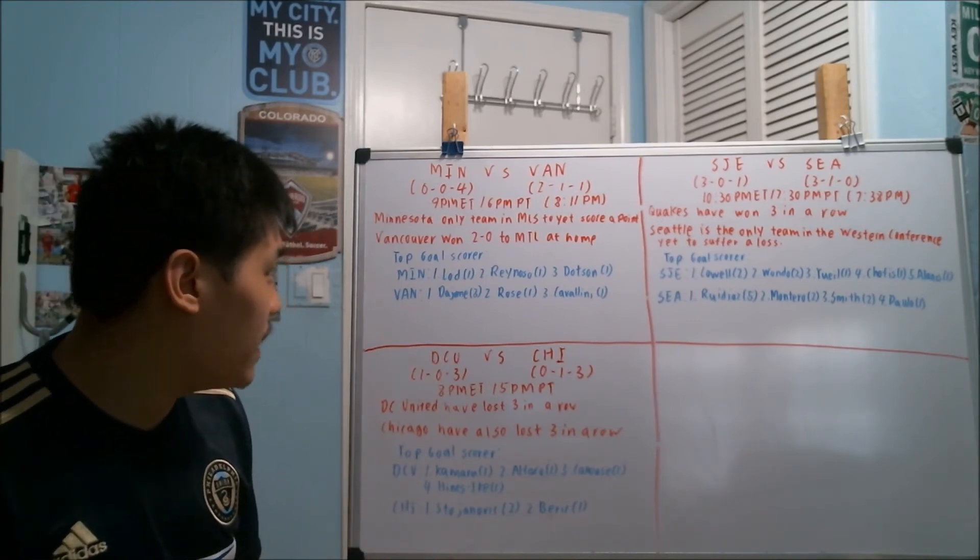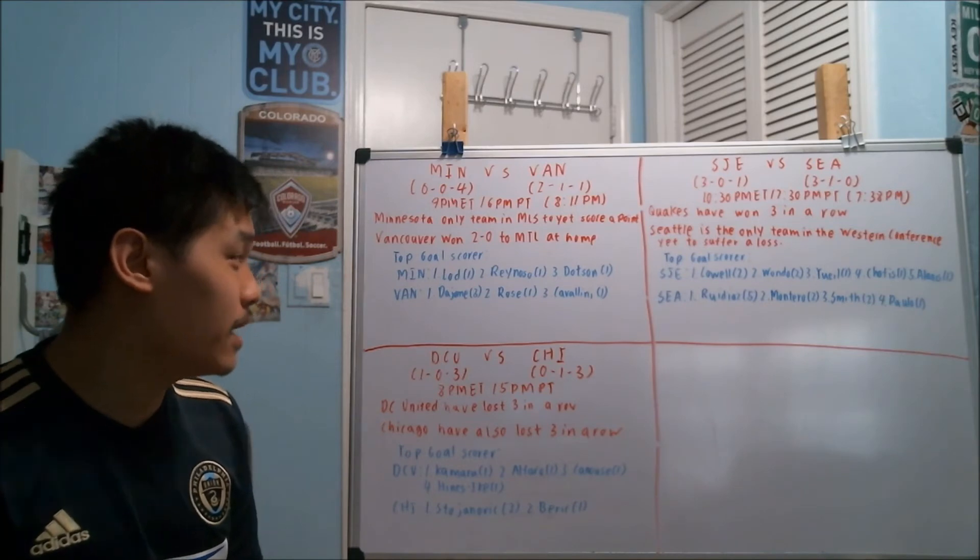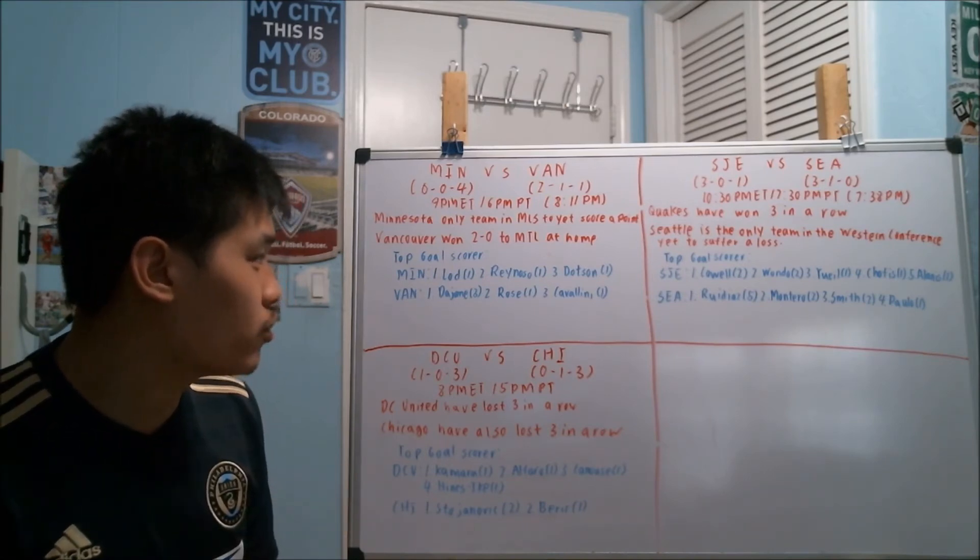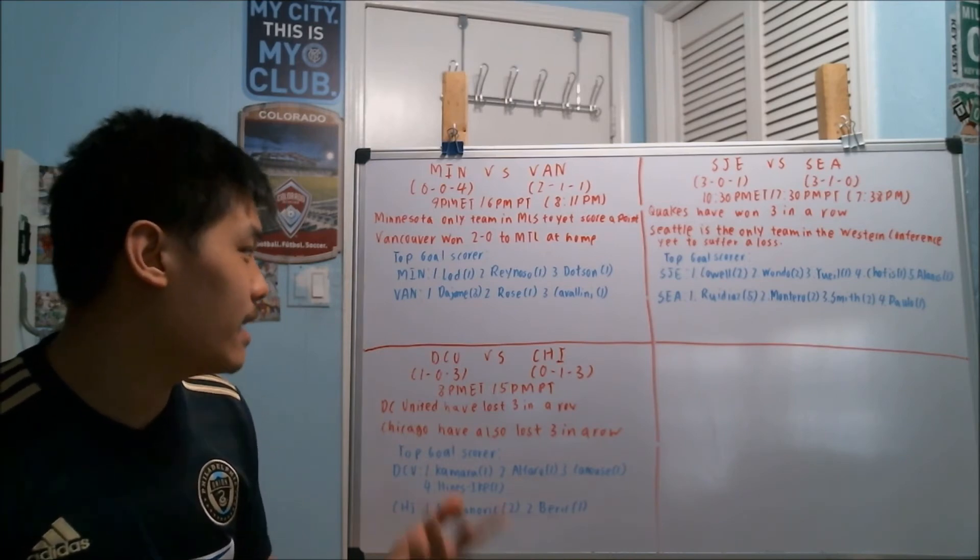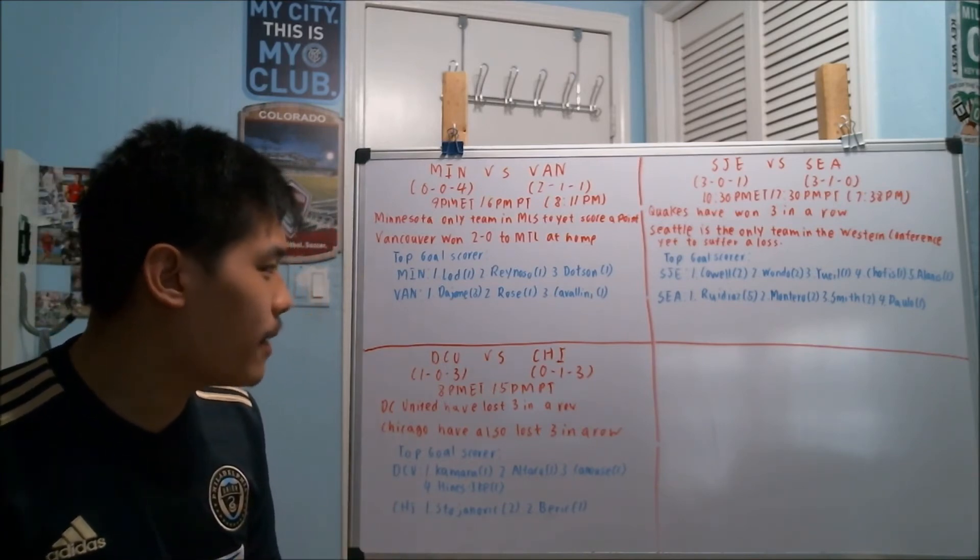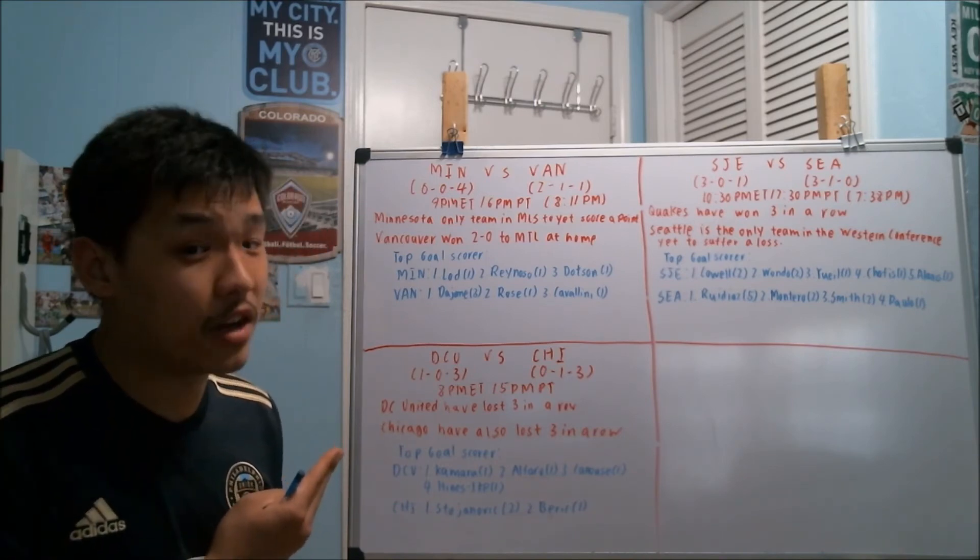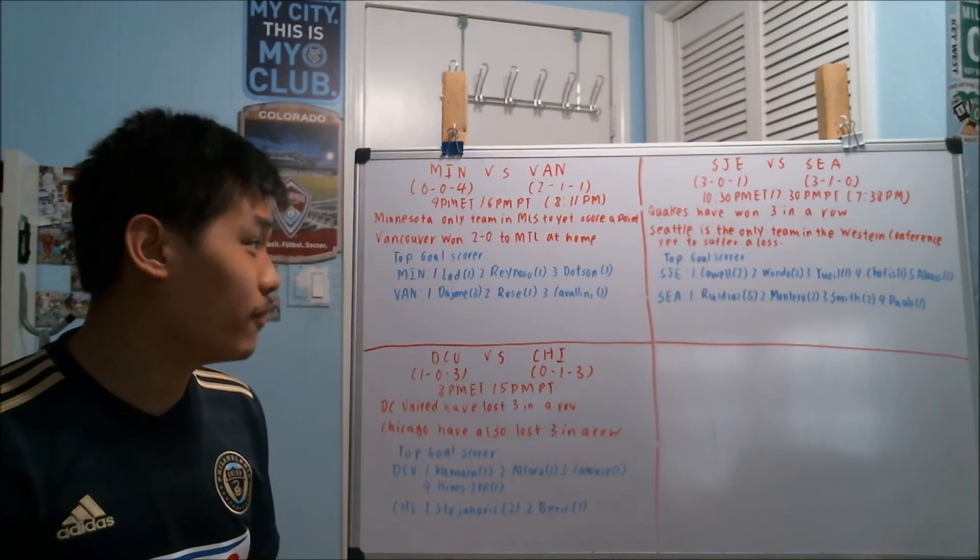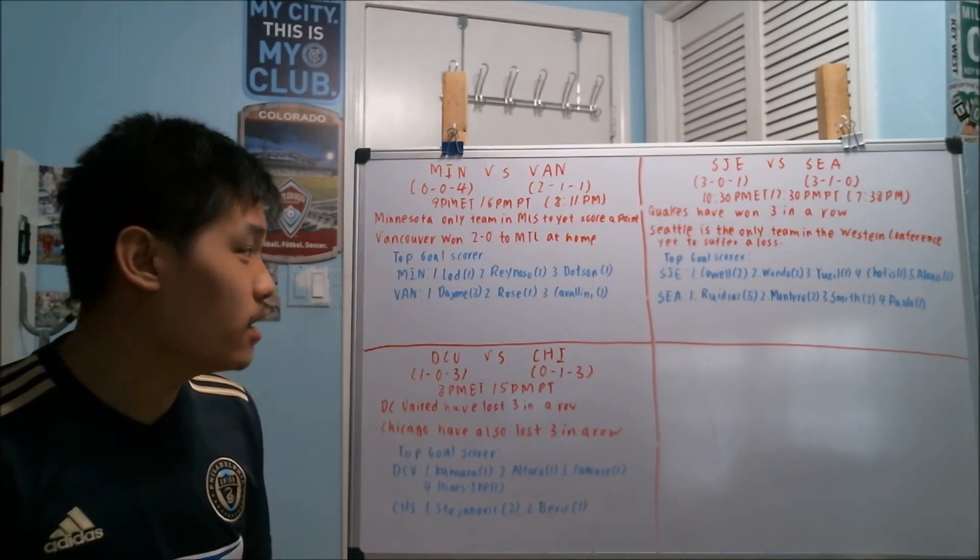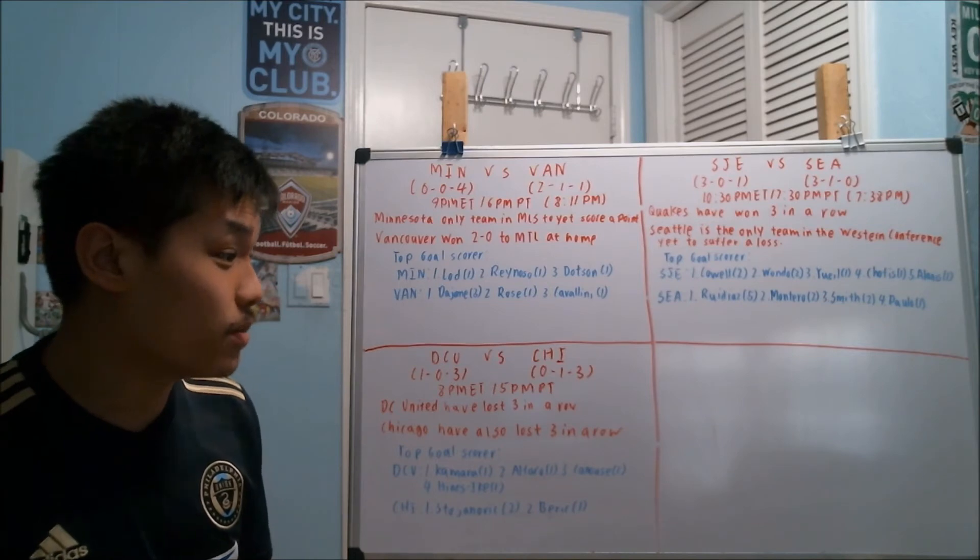In this game against the Vancouver Whitecaps, a team that is one of the more surprising teams in the league and seems to be able to take care of business against teams that they should beat, this does not give me a lot of confidence that Minnesota could potentially finally get their first win. This game will start at 9 p.m. Eastern, 6 p.m. Pacific, a rare late kickoff in Minnesota, as this game isn't actually going to kick off until 8:11 p.m. local time.